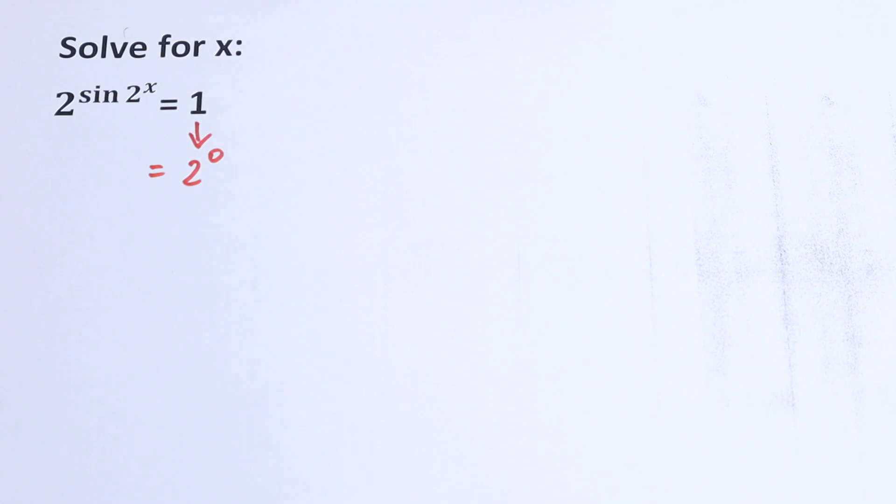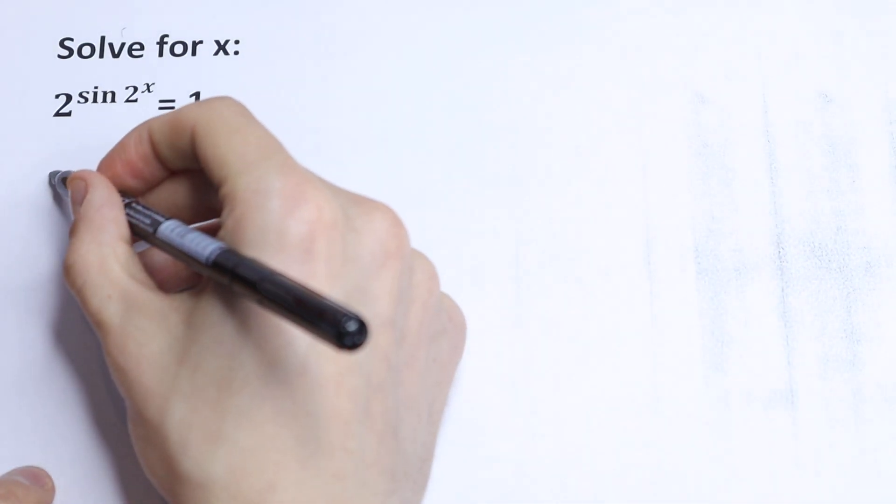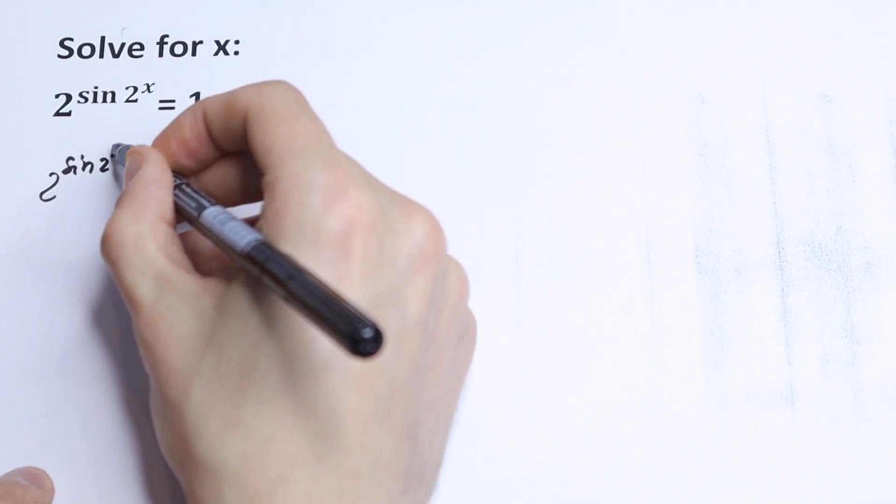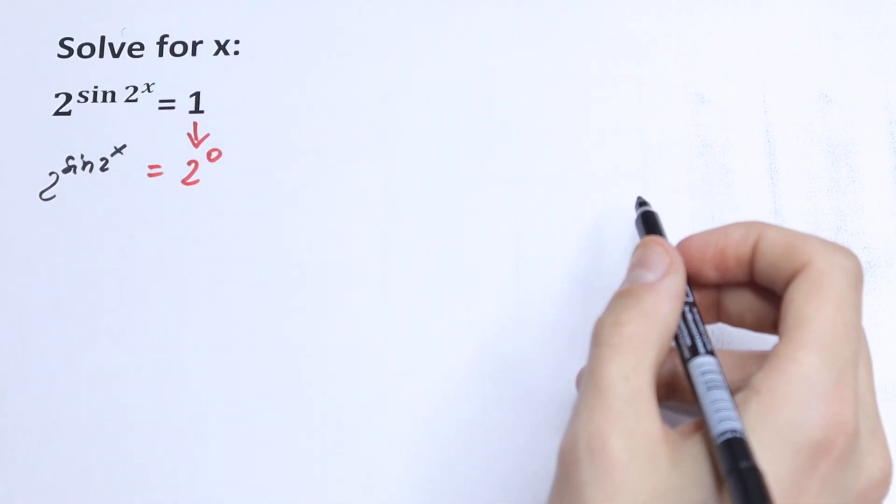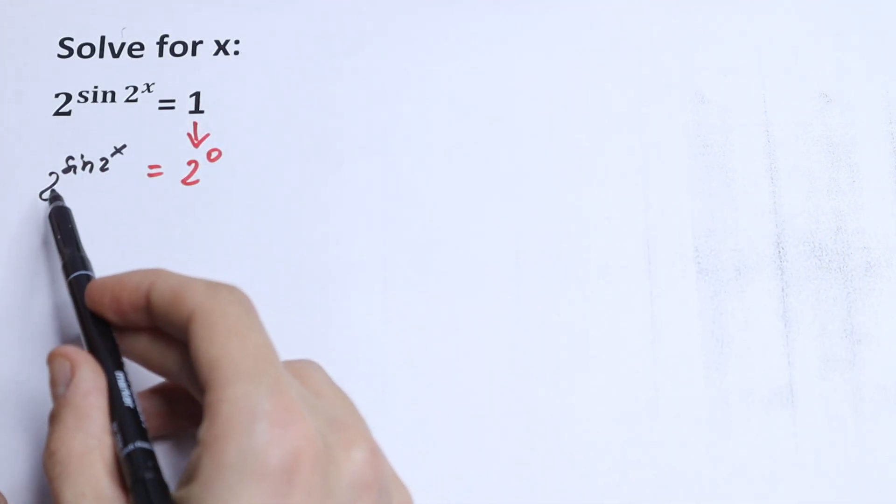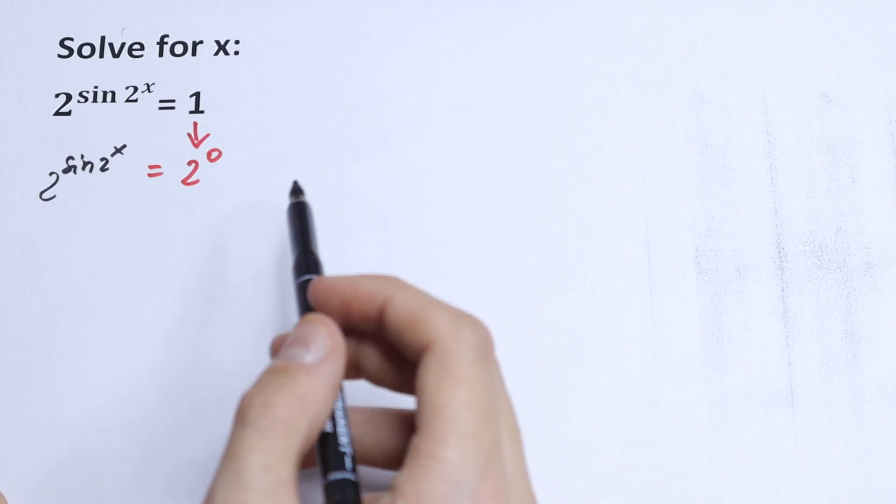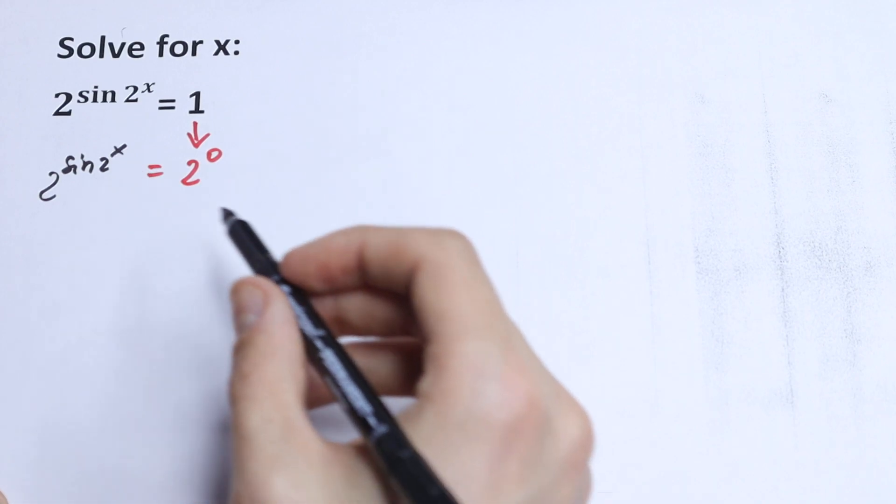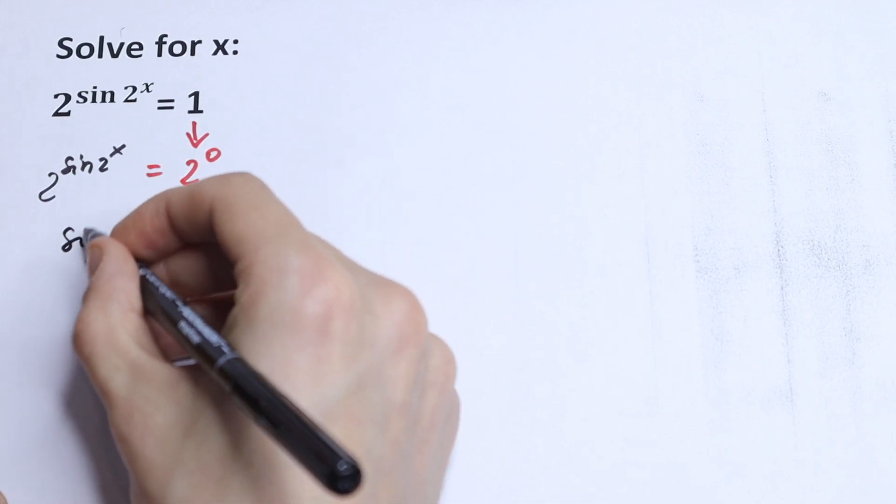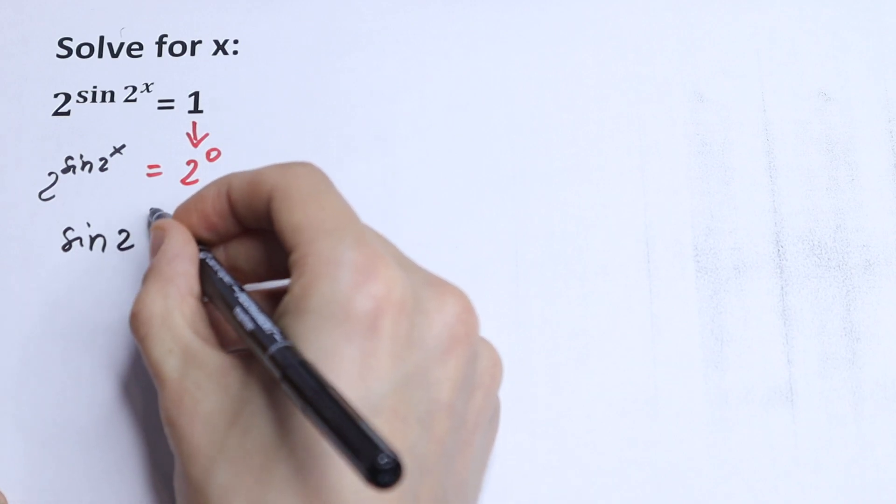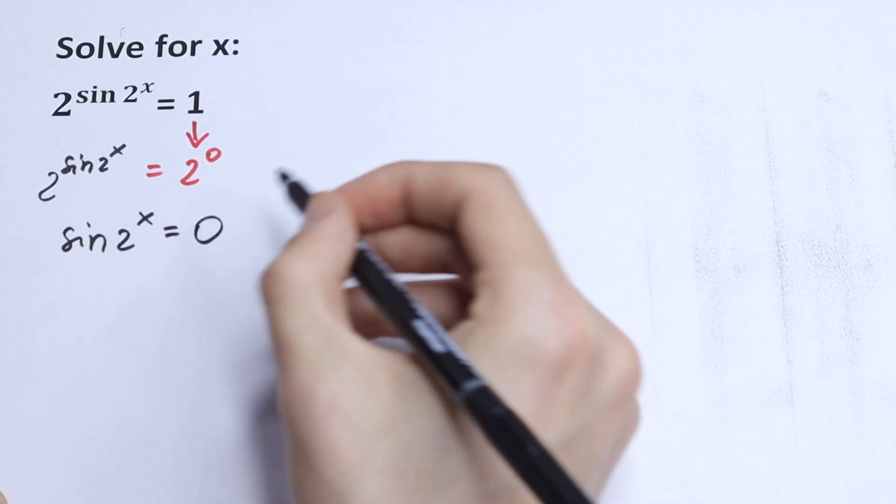And this on the left, I write the same as right here, so 2 to the power sin 2 to the power x. What we're going to do next? Of course we have the same basis, so we can work with our exponent, so we can write an equation with our exponent. So we will have sin 2^x equal to 0.